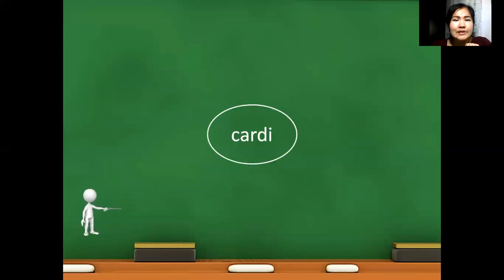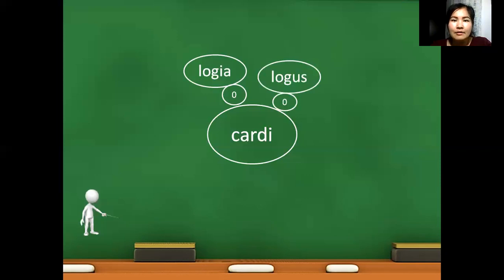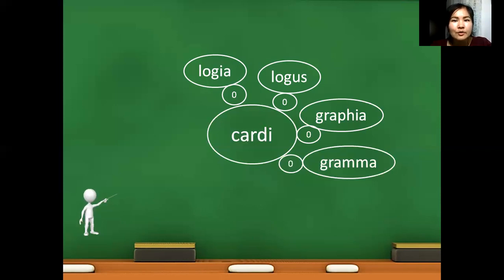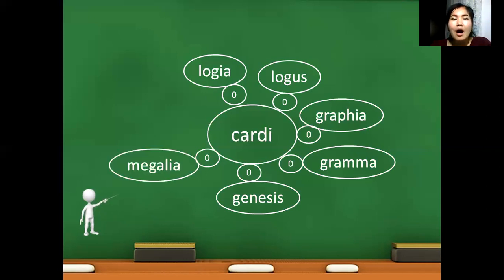Look at the examples. Cardi, it is root word, nucleus of compound term, and it is Greek designation of organ heart. By attaching to this root word different types of component elements with the help of combining vowels, we can construct different types of clinical compound terms. Cardiologia, branch of medicine studying heart. Cardiologus, physician specializing in heart. Cardiographia, graphical recording of heart work. Cardiogramma, graphical representation of heart work. Cardiogenesis, formation of heart in fetus. Cardiomegalia, abnormal enlargement of heart. Cardiolysis, surgical operation on heart.